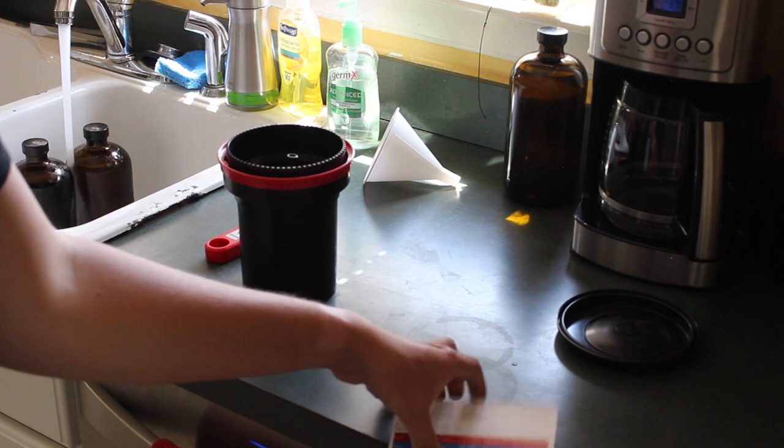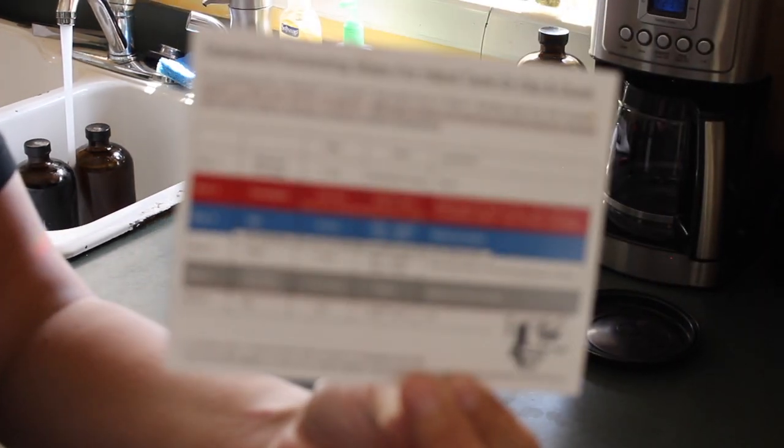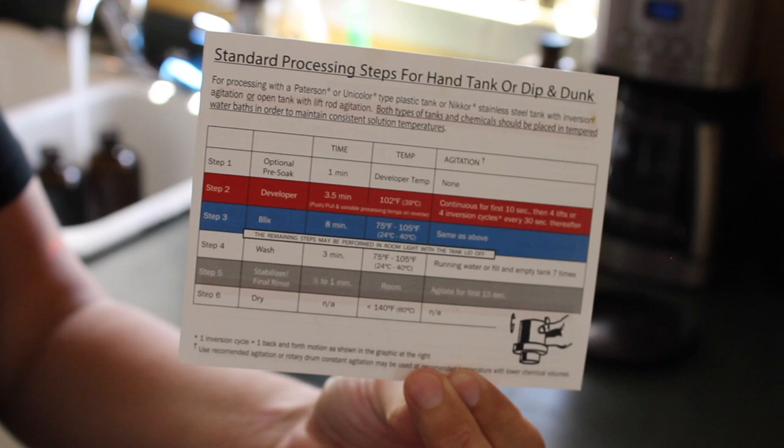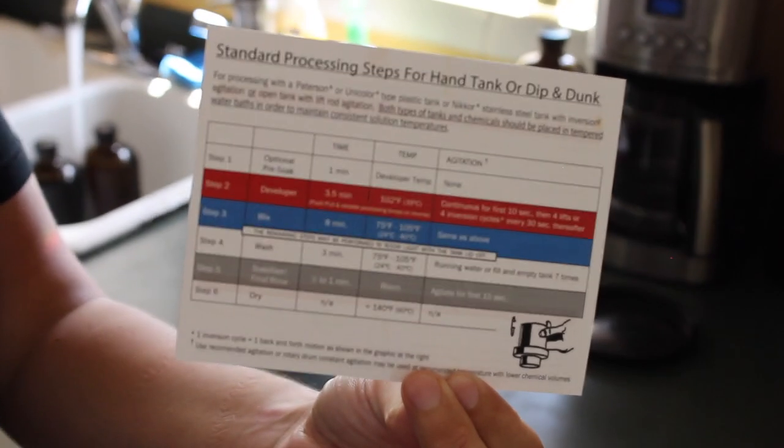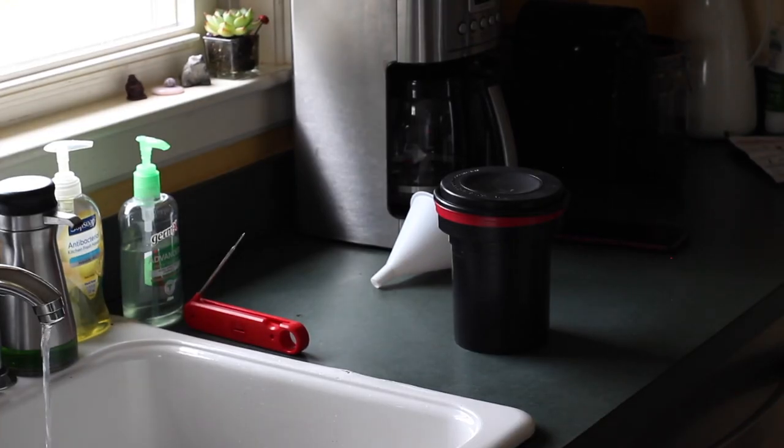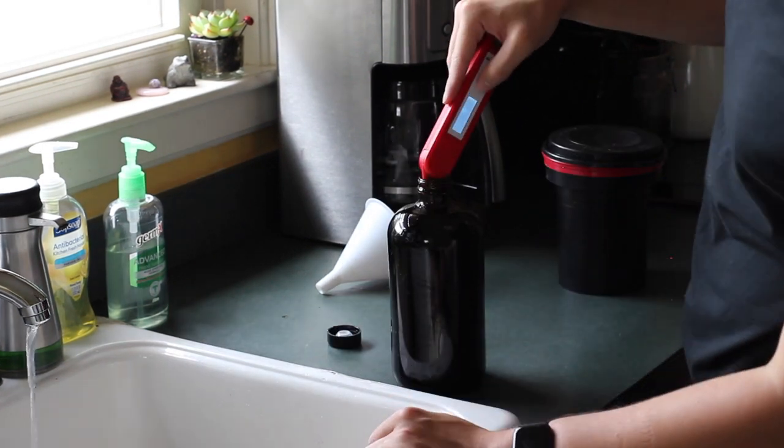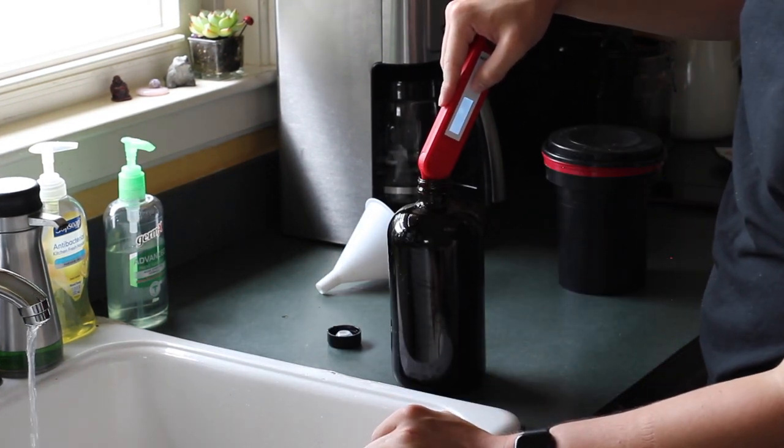Primarily you're going to want to follow the instructions on your specific kit's card. For the CineStill kit, it's pretty straightforward because you just do about three and a half minutes of development time with constant agitation. The blix is about eight minutes with constant agitation. You're going to want to heat your chemicals up to certain temperatures.